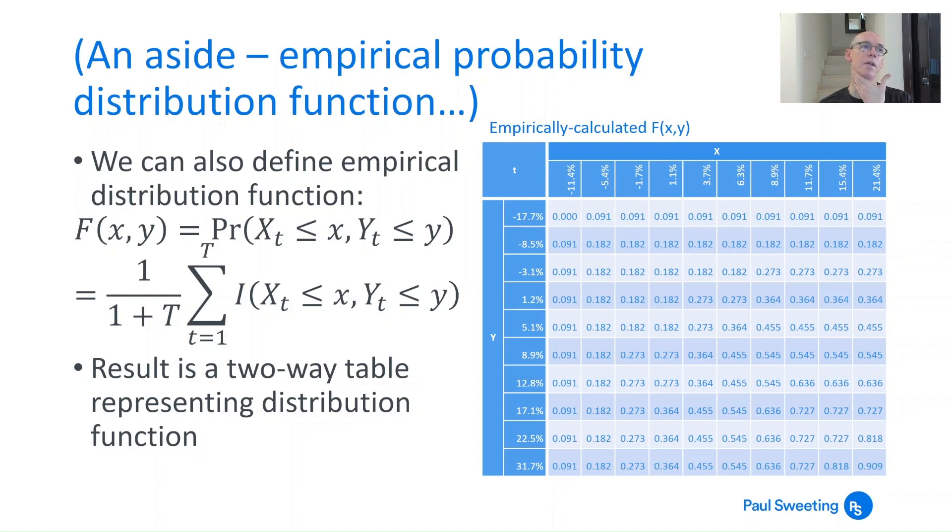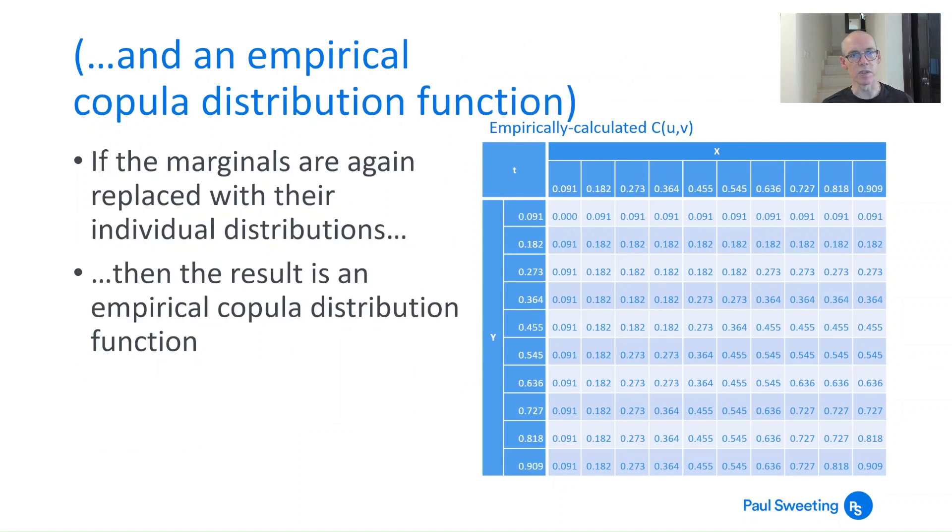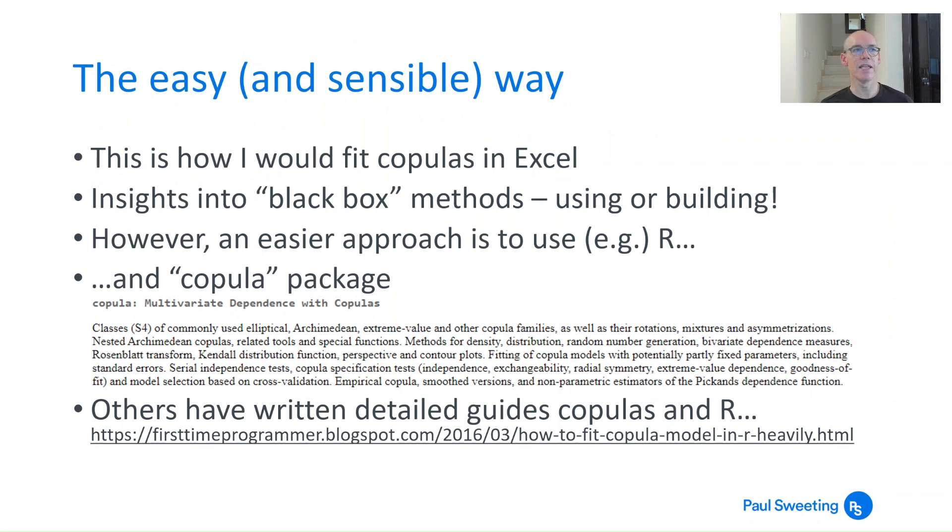Just as an aside, you can of course calculate an empirical probability distribution function. So we looked at the density function. If you want to calculate an empirical distribution function, use a very similar function to the one that was used before. F of x,y is probability that x_t is less than x and y_t is less than y, and then rank them accordingly. That gives you this table here which goes from zero in the top left to 0.909 in the bottom right. And then if you replace the marginals with the individual distributions again, what you got there is an empirically calculated copula distribution function, which looks quite nice.